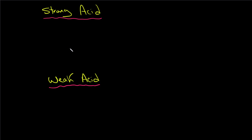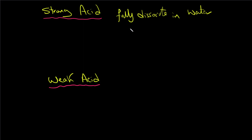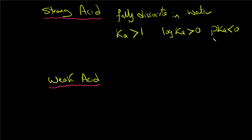A strong acid has a high Ka and a small pKa, and vice versa. A strong acid will pretty much fully dissociate in water, so Ka will be much larger than one. Since log Ka is greater than zero, pKa will be less than zero — it will be negative.